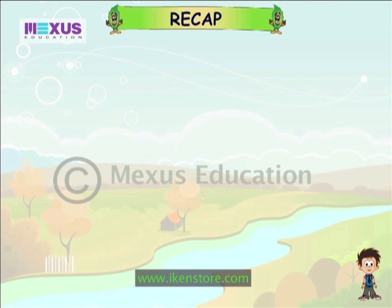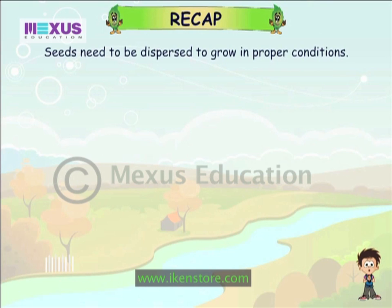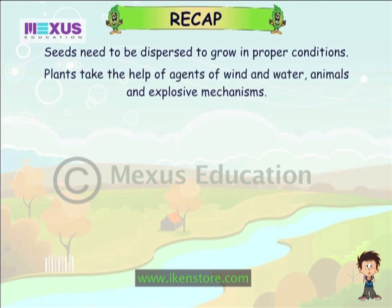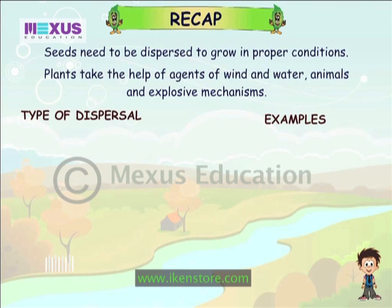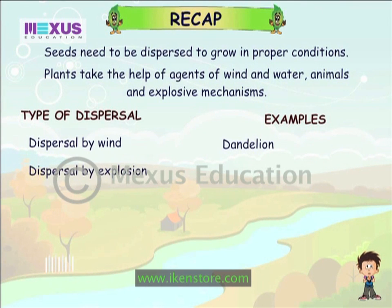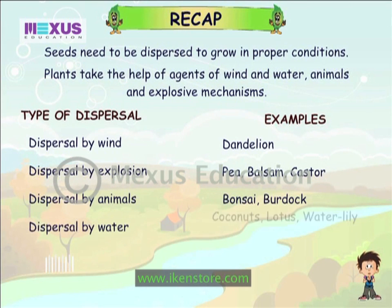Let us do a quick recap. Seeds need to be dispersed to grow in proper conditions. Plants take the help of agents of wind and water, animals and explosive mechanisms. Types of dispersal include: dispersal by wind, dispersal by explosion, dispersal by animals, and dispersal by water.